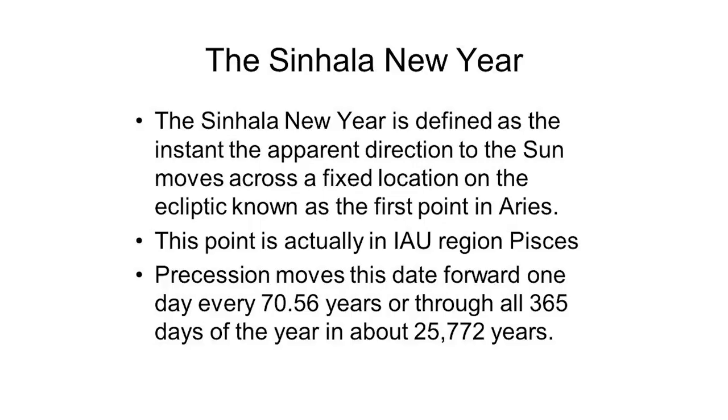The Sinhala New Year has been defined at one exact spot in the sky. When the sun crosses that spot, the new year starts. They are not trying to keep the equinox at some fixed point — they have selected a spot on the ecliptic, and when the sun crosses that point, the new year begins. This means they use a sidereal year, not a tropical year.